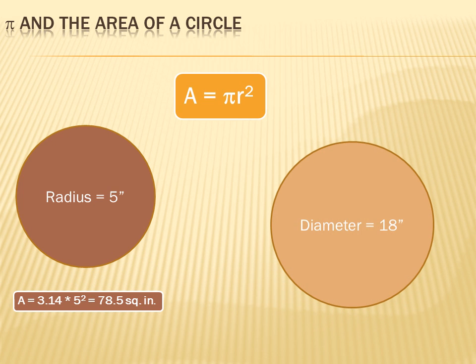Now, what if they tell us the diameter of the circle? In this case, the diameter of the circle is 18 inches. Well, all you have to do is remember that the diameter is twice the radius, or that one-half the diameter equals the radius. And then plug that into A equals pi r squared. A equals 3.14 times 18 times one-half squared. And in this case, it equals 254.34 square inches.